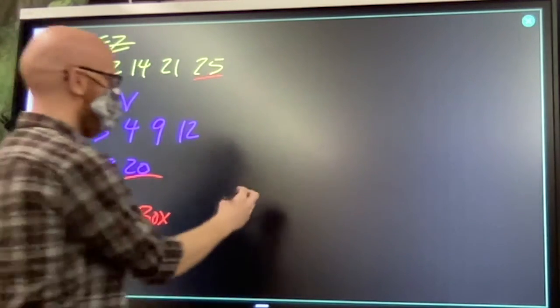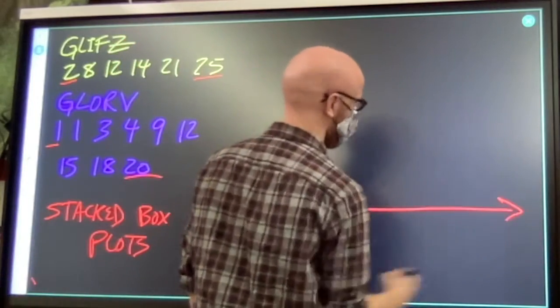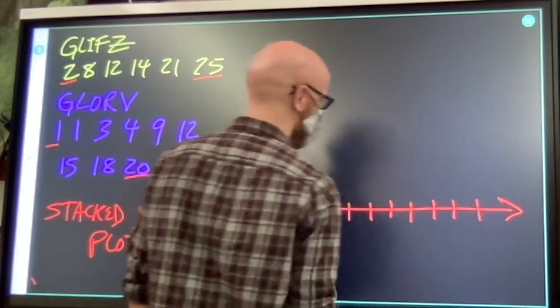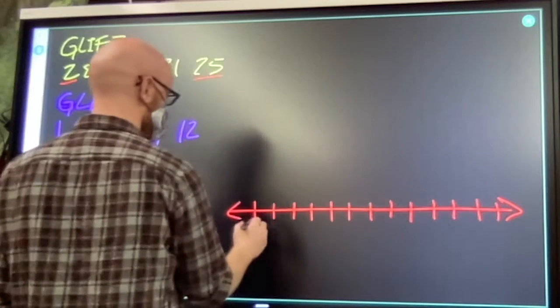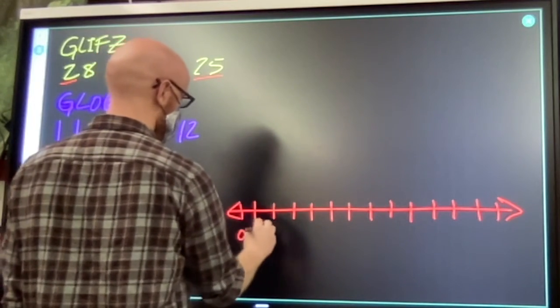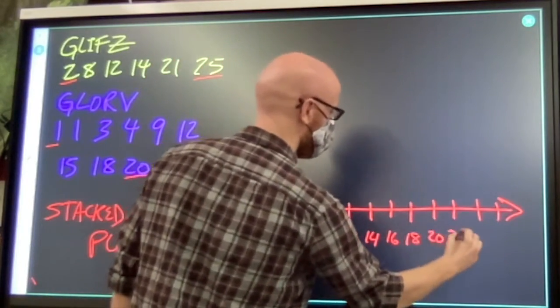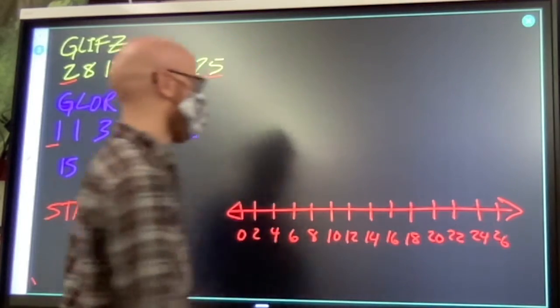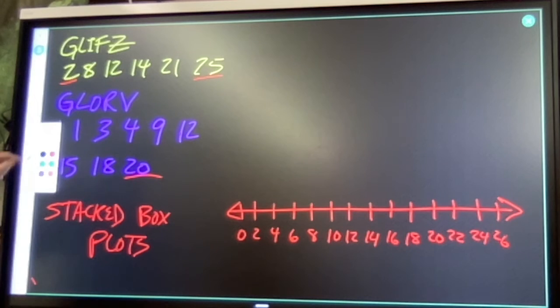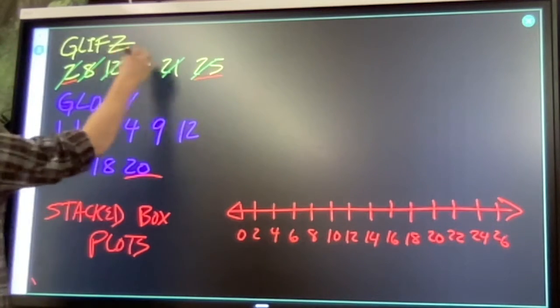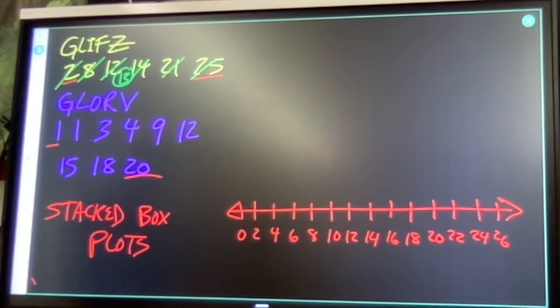We need to get from 1 to 25 on our number line. Make a box plot. You need to find median. So, the center number, 12 and 14, halfway between them is 13. That's the median.